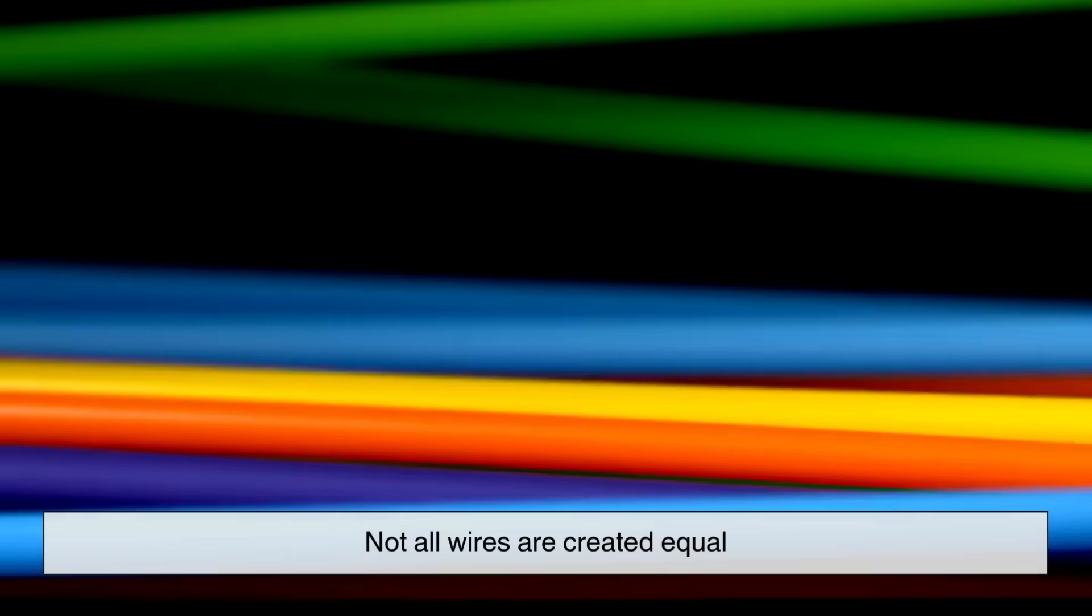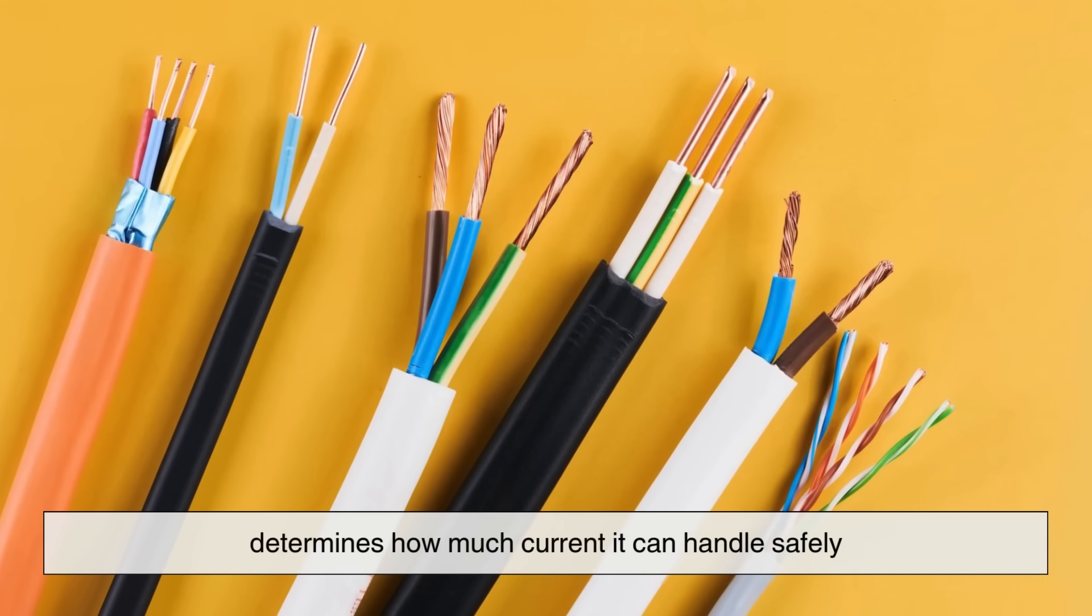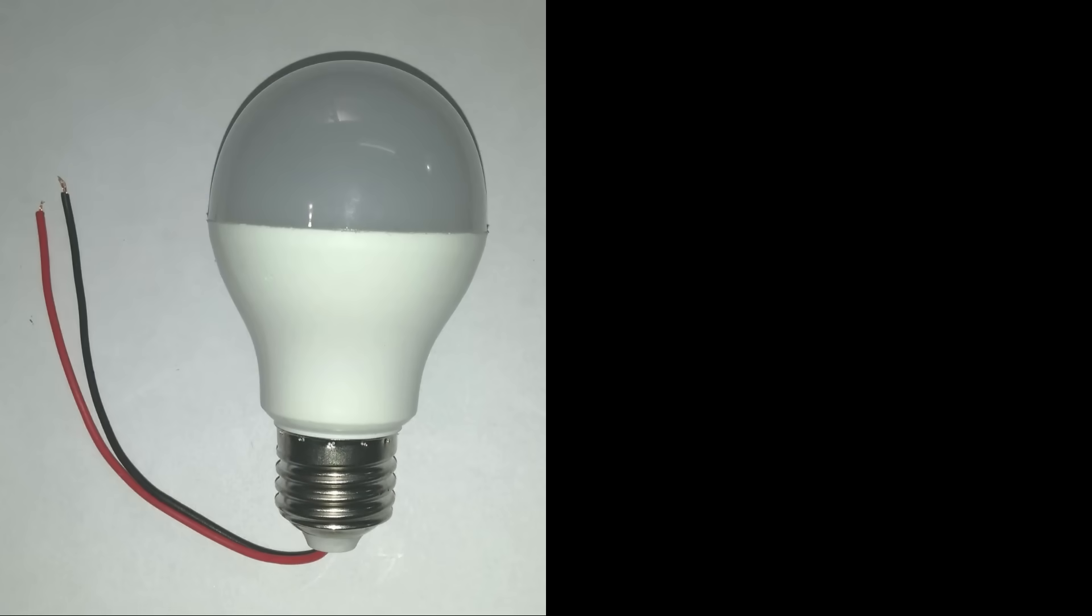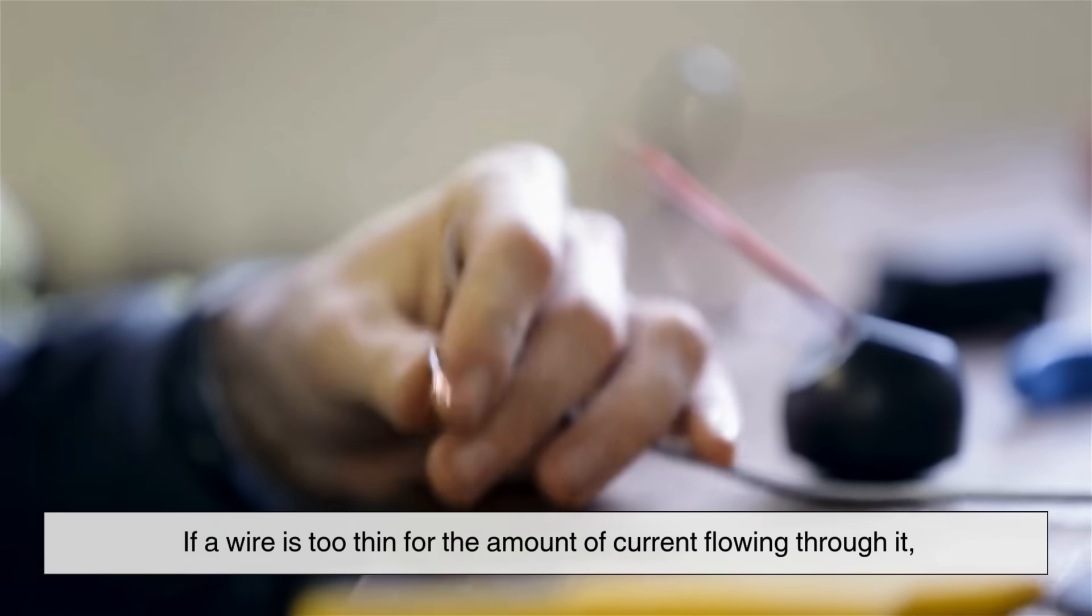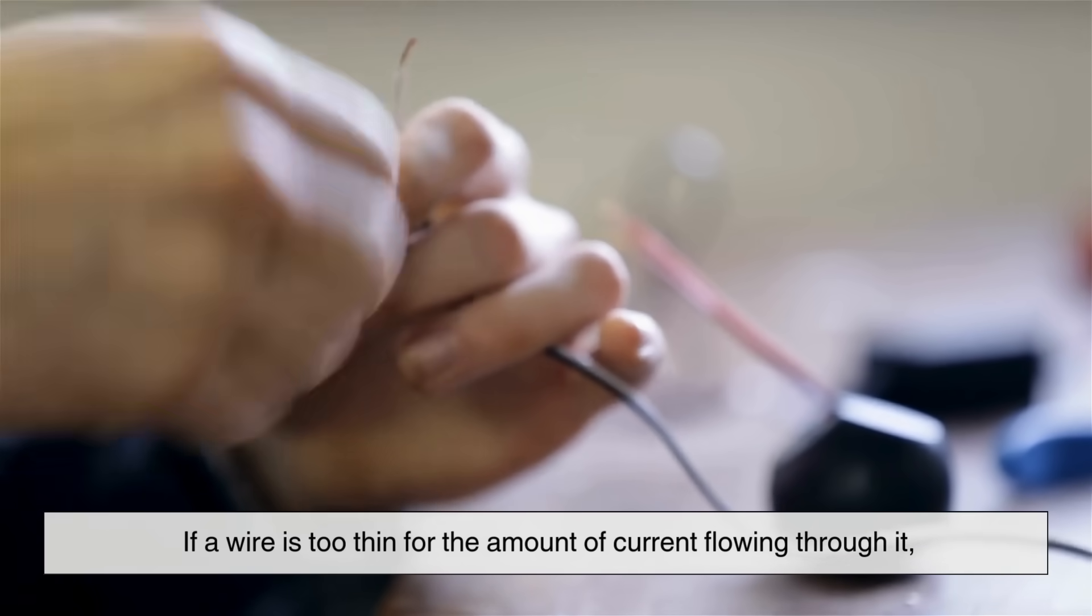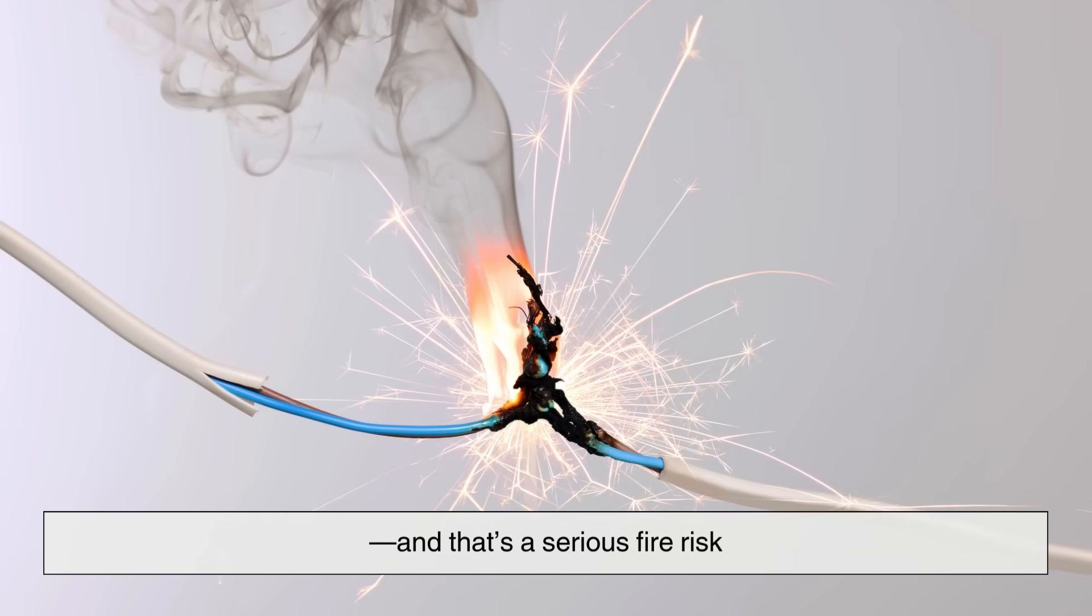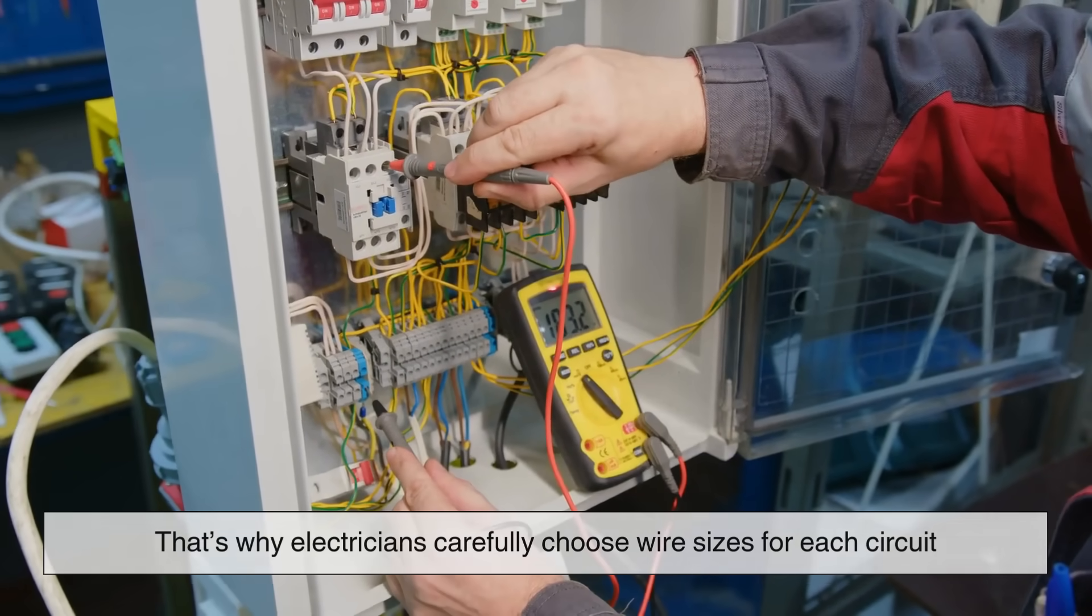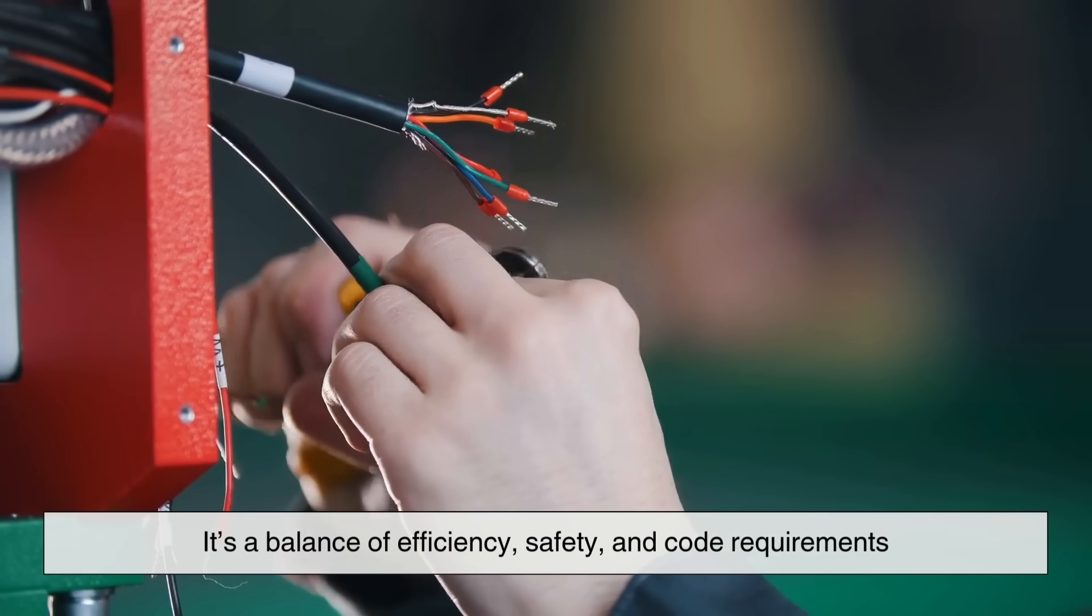Not all wires are created equal. The thickness of a wire, called its gauge, determines how much current it can handle safely. For example, the wire that powers your bedroom light doesn't need to be as thick as the one feeding your electric oven. If a wire is too thin for the amount of current flowing through it, it can overheat. And that's a serious fire risk. That's why electricians carefully choose wire sizes for each circuit. It's a balance of efficiency, safety, and code requirements.